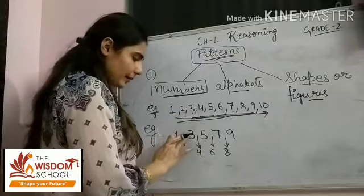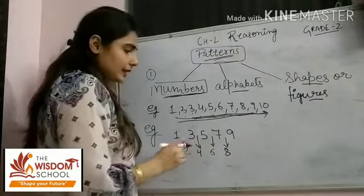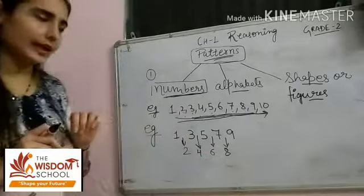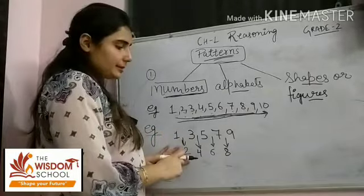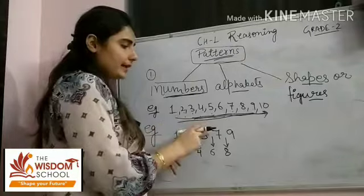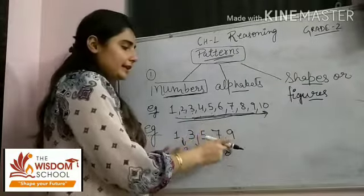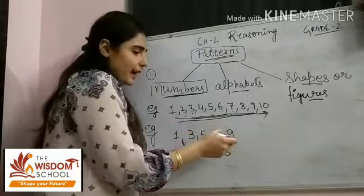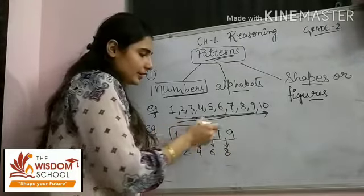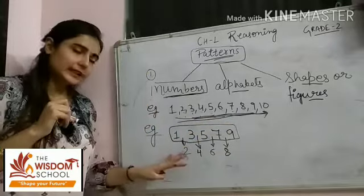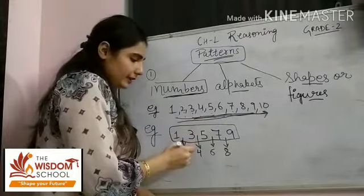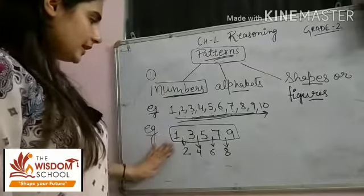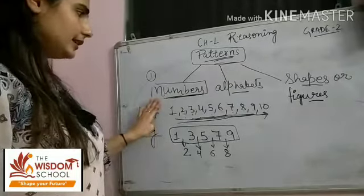Toh bachon yeh jo humne yahan pe counting likhi hai, yeh humne ek pattern banaya hai. Yahan humne 1-1 number skip karke likha hai — jaise ki 1 ke baad 2 ko skip kiya, 3 ke baad 4 ko skip kiya, 5 ke baad 6 ko skip kiya, 7 ke baad 8 ko skip kiya. So I hope students aap sabko yahan pe is pattern ke baare mein idea hoga, because you can clearly identify here 1-1 number is being skipped.